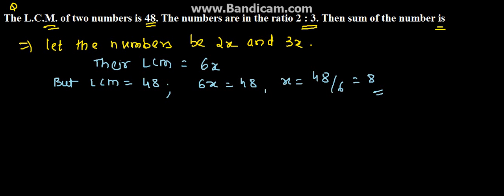Now we have derived the value of x. Therefore, the first number is 2x, which equals 2 times 8, which equals 16.